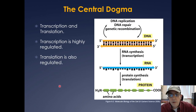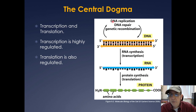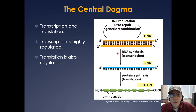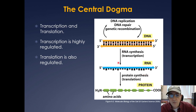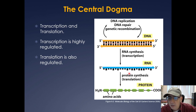Here's the central dogma first proposed by Francis Crick. It's very simple: DNA to RNA to protein. We've already covered DNA replication, repair, and recombination, so today we're going to look at RNA synthesis or transcription. Next lecture, we'll cover translation or protein synthesis. Transcription is a very highly regulated process; translation is also regulated, but the vast majority of the regulation really comes in at the level of transcription.